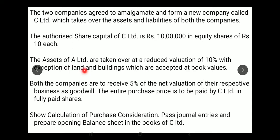Both the companies are to receive 5% of the net valuation of their respective businesses as goodwill. So on the net assets of each company, 5% will be added as goodwill for each of them. The entire purchase price is to be paid by C Limited in fully paid equity shares — C Limited will issue fully paid equity shares to settle the purchase consideration.